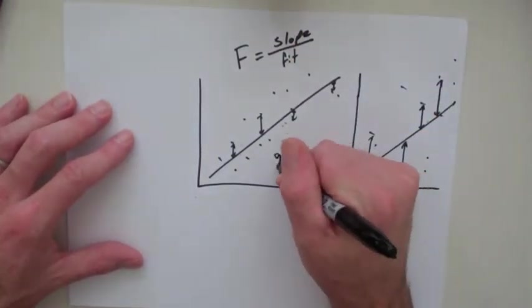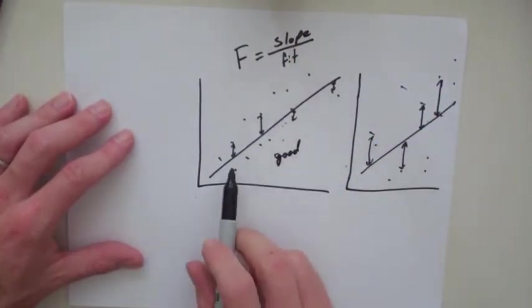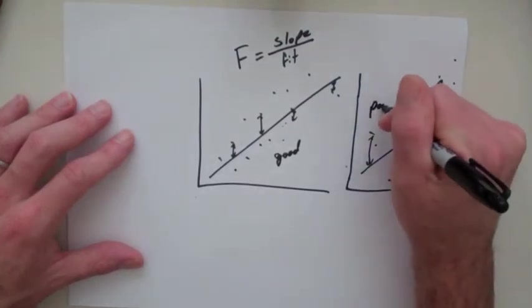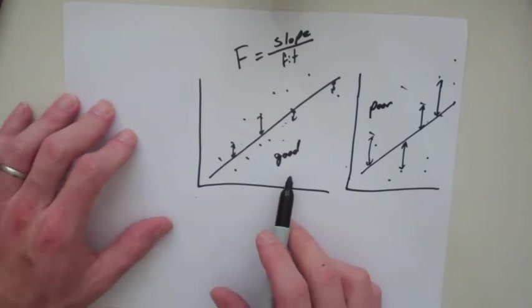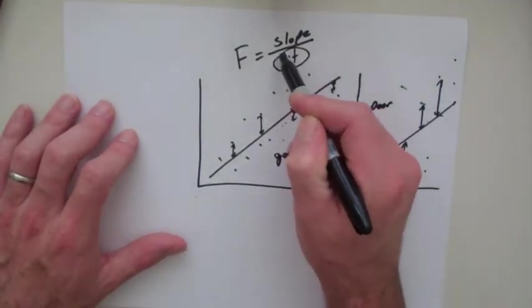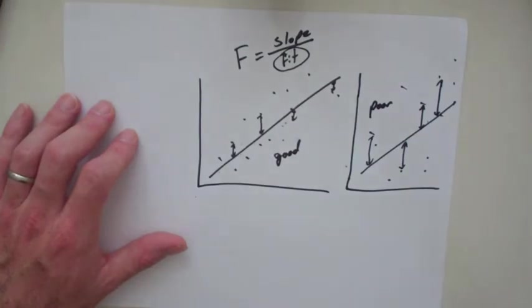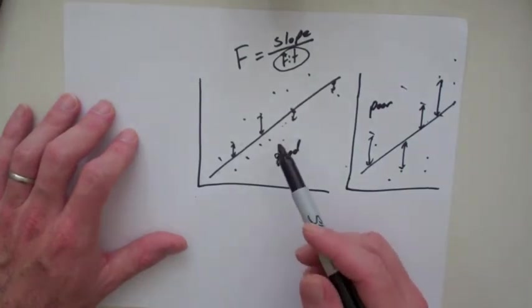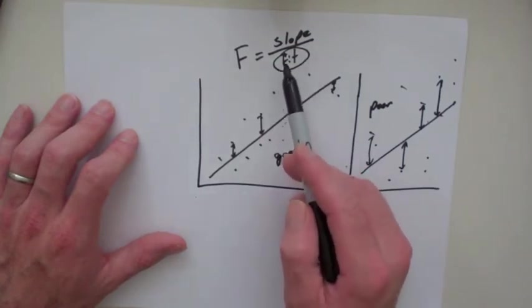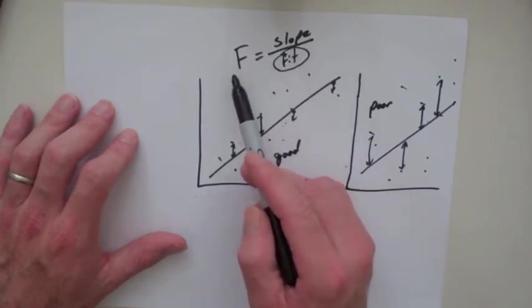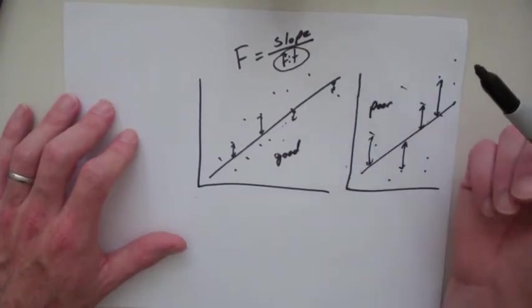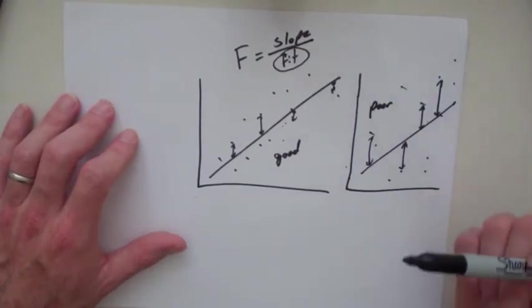This has a good fit. That is, the distance between each point and a line is small. This has a poor fit. As fit gets better, this actually decreases. A good fit has a low number. A low number in the denominator increases the f-value. So a high slope increases f-value. A good fit increases f-value.